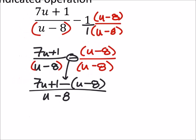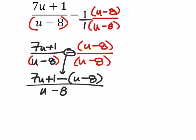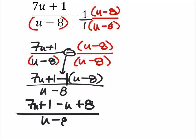If I distribute this as a negative 1, I got a 7u plus 1 minus u plus 8, all over u minus 8.